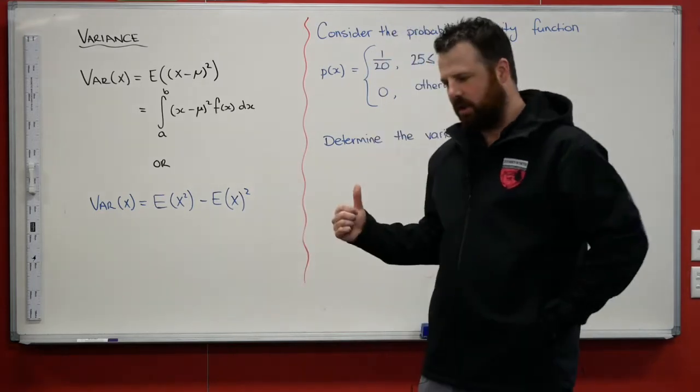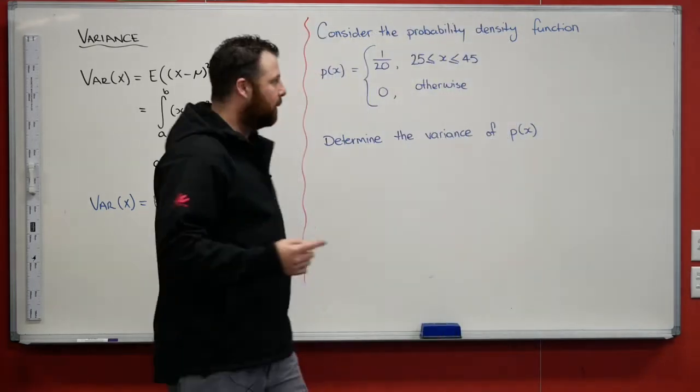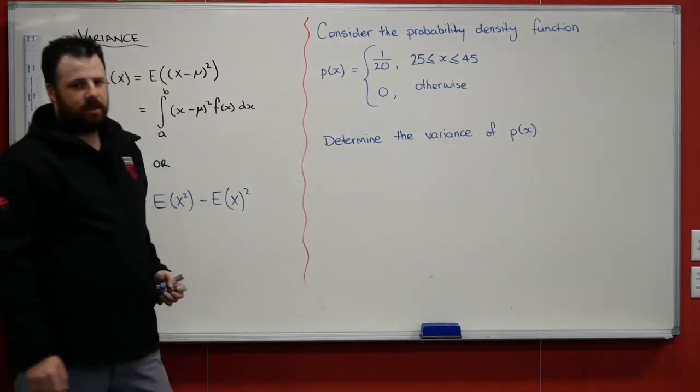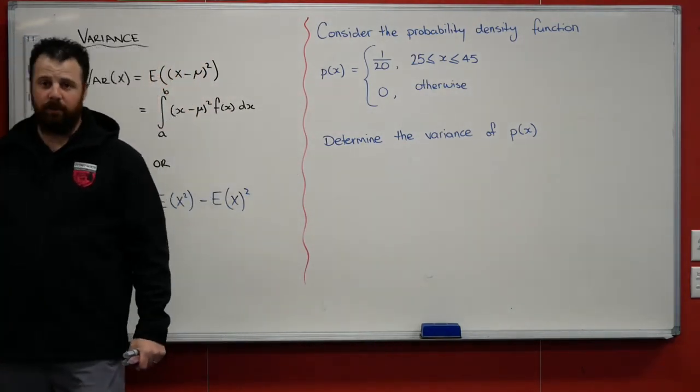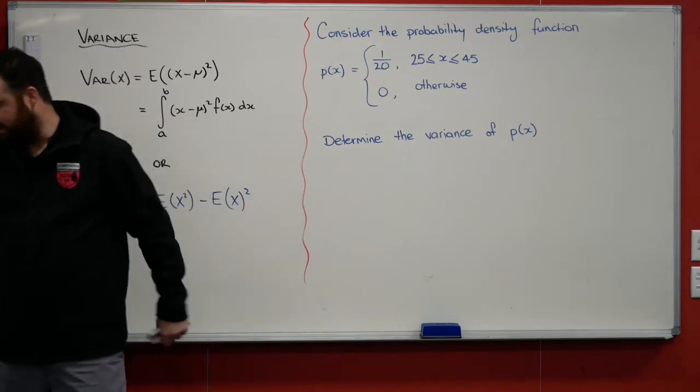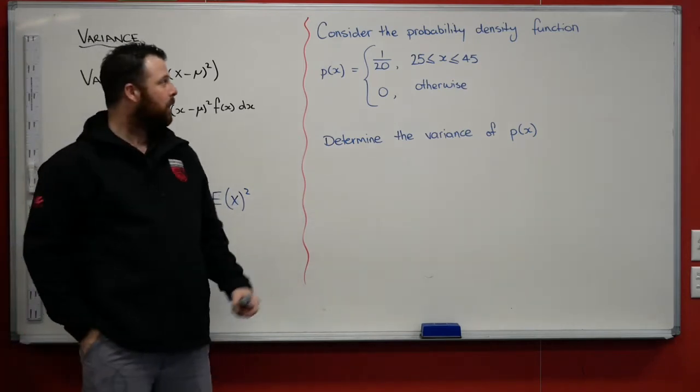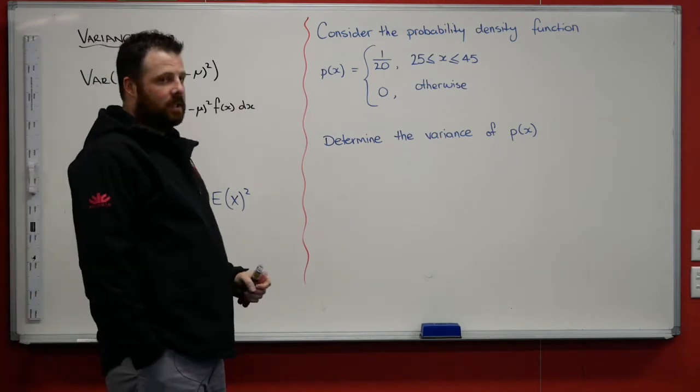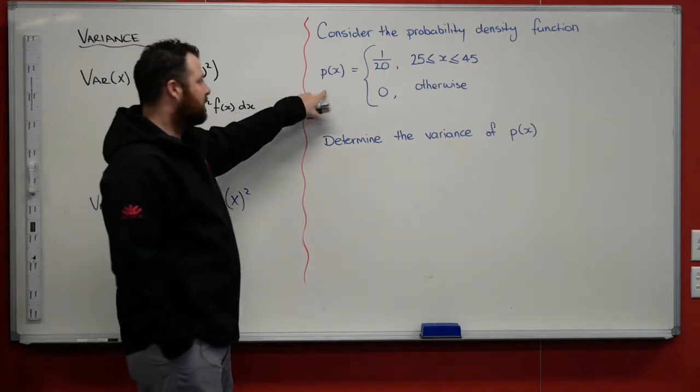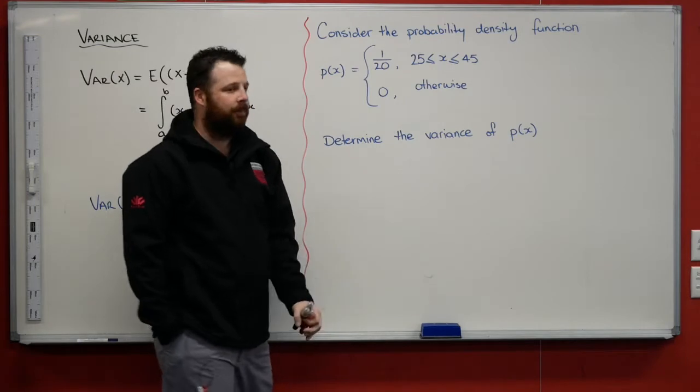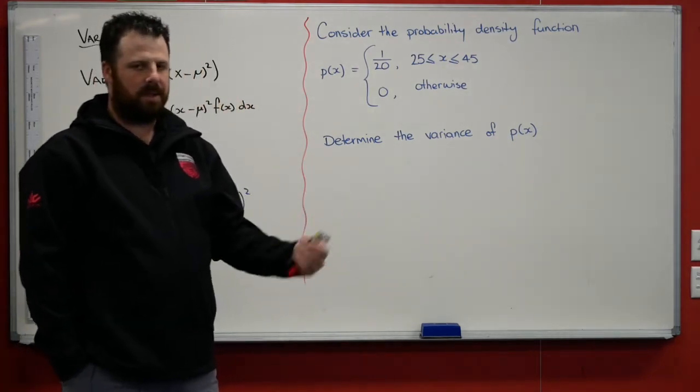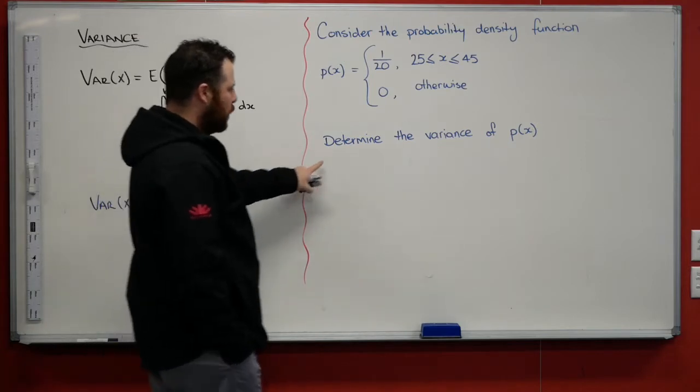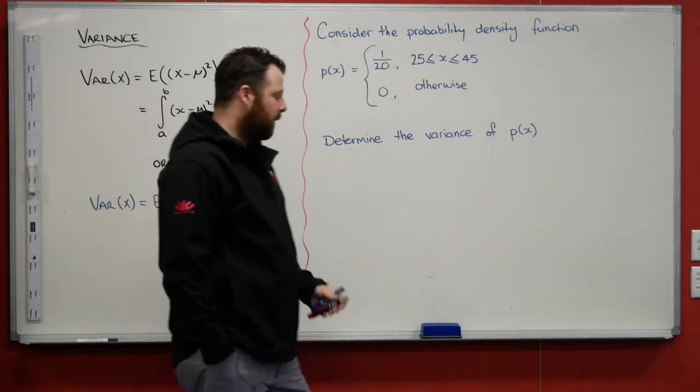So what's that look like? Let's jump into an example straightaway here on the right-hand side of the board. This is the example from your booklet, worked example eight. Consider the following probability density function: p(x) is equal to 1/20 for values of x between 25 and 45 and zero otherwise. Determine the variance of p(x).